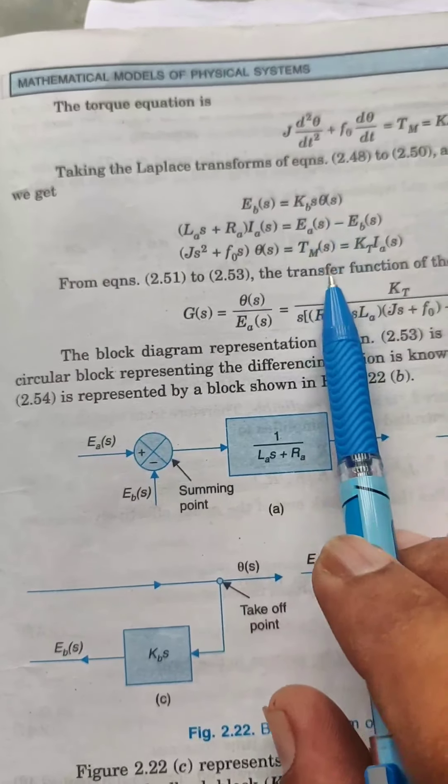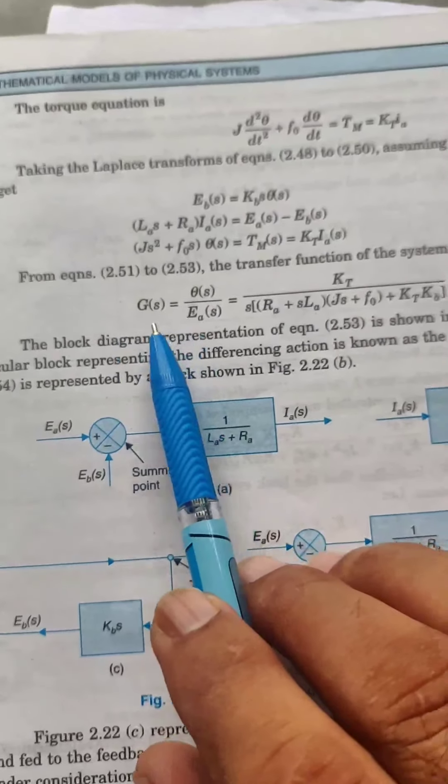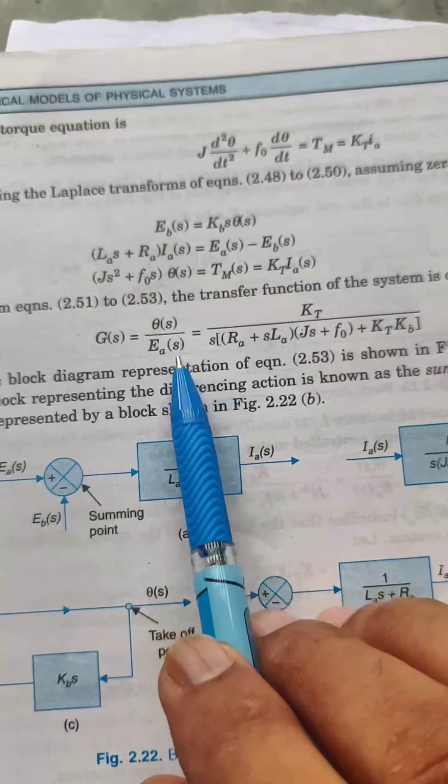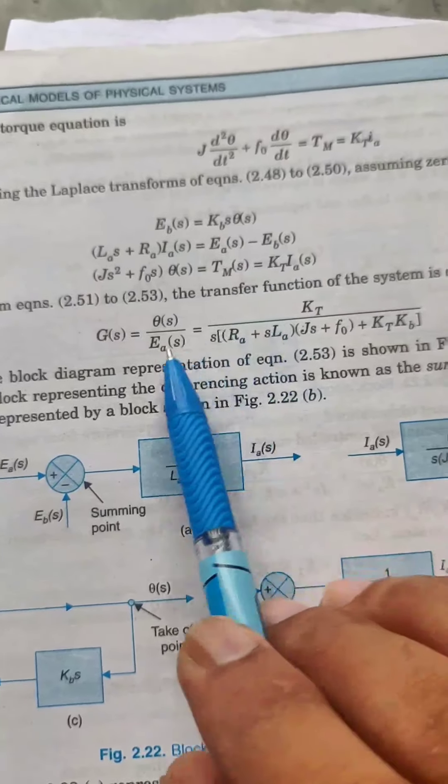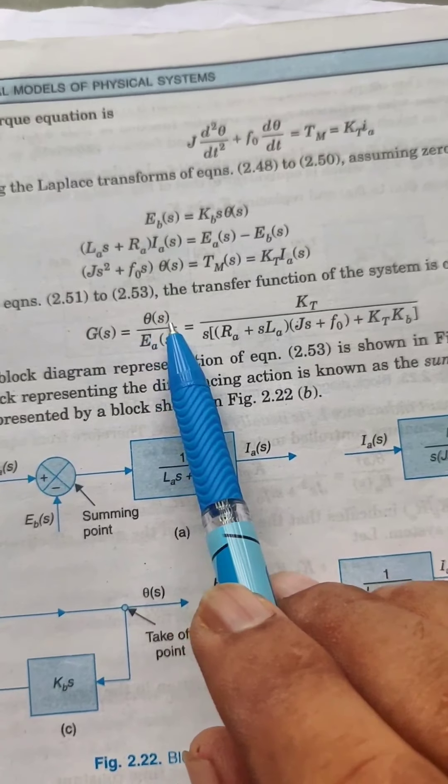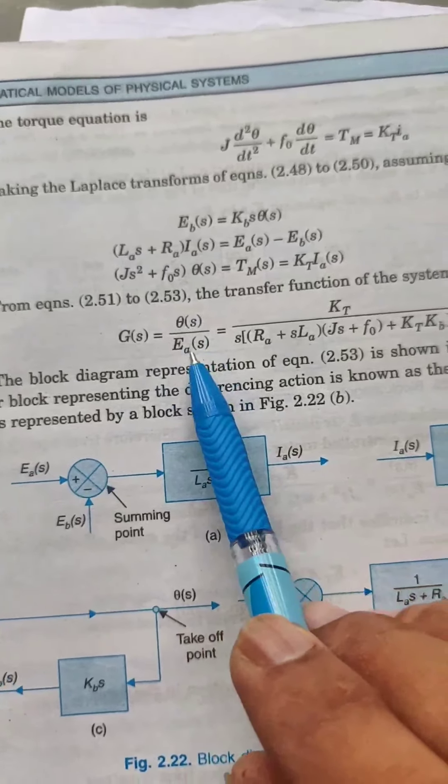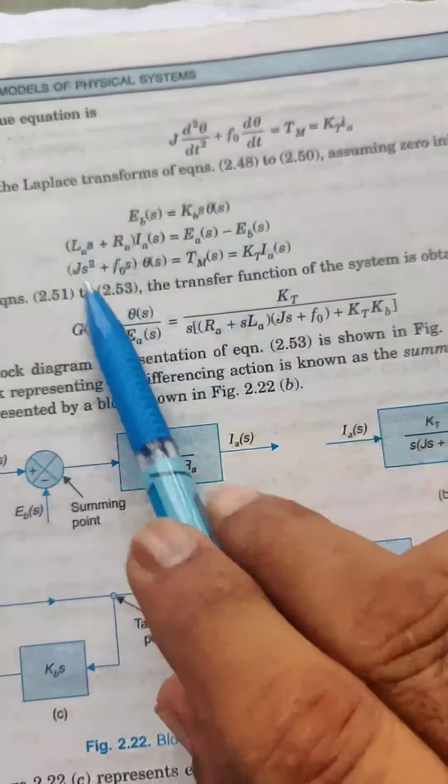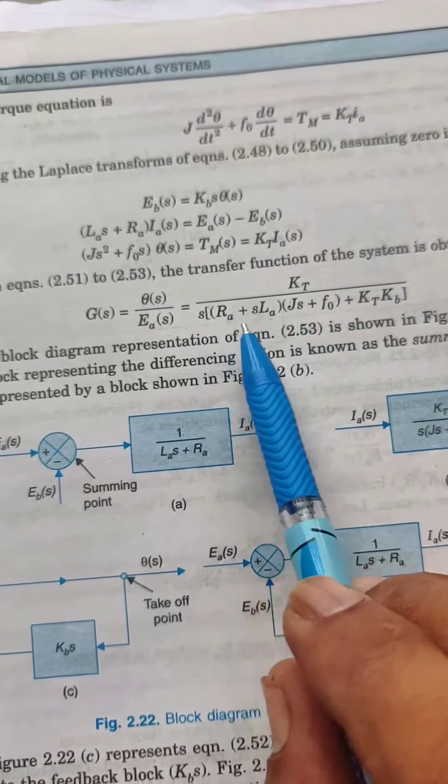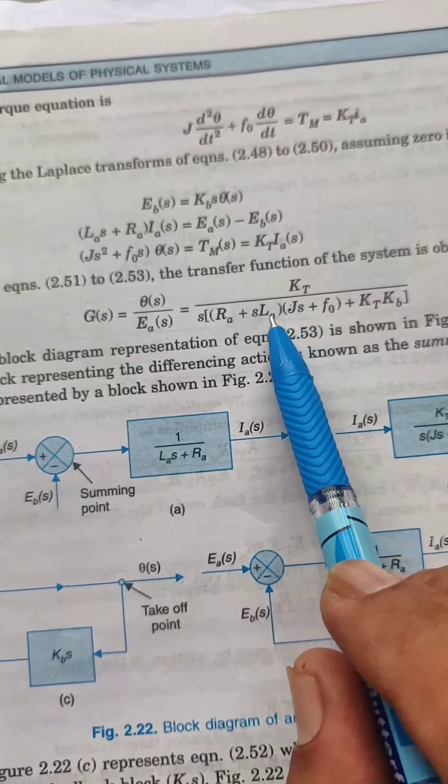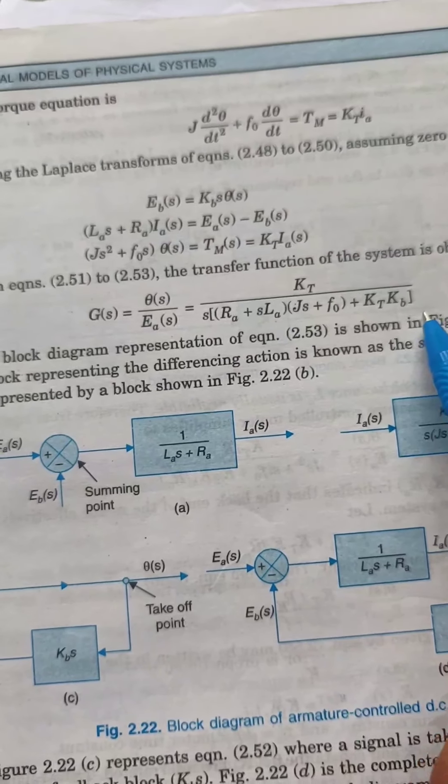In this way, the transfer function of the DC servo motor has been generated with the help of three equations. Theta(s) upon EA(s) is the transfer function. By solving these equations we will get KT upon s(RA plus LAs) multiplied by (Js plus F0) plus KT KB.